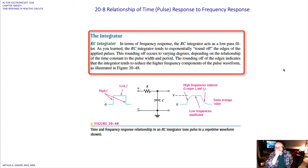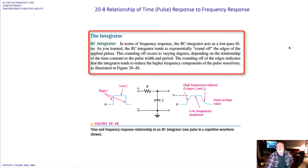For the RC integrator in terms of frequency response, it acts as a low pass filter. The RC integrator tends to exponentially round off the edges of the applied pulses. This rounding off occurs to varying degrees depending on the relationship of the time constant to the pulse width and period. The rounding off of the edges indicates that an integrator tends to reduce the higher frequency components of the pulse waveform.